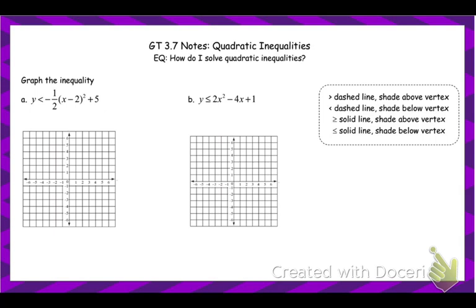To start, we'll go ahead and graph this first parabola. Look at your transformations — the vertex here is (2, 5). It's been reflected over the x-axis and compressed by one half. The normal parent function pattern from the vertex would be: right 1 up 1, right 2 up 4, right 3 up 9, right 4 up 16.